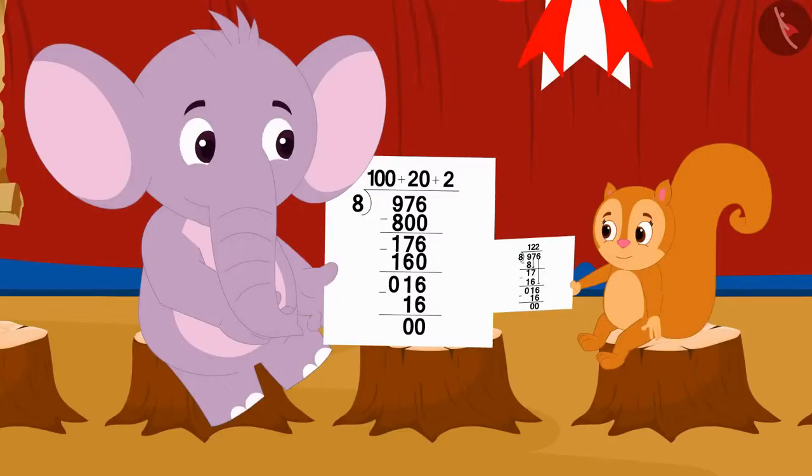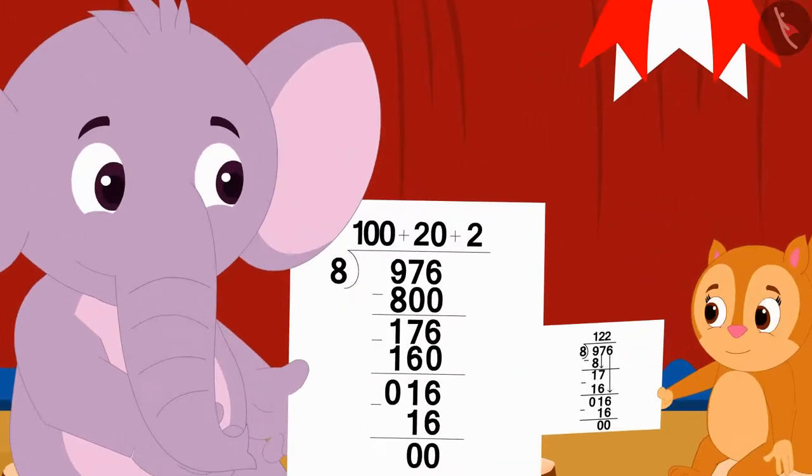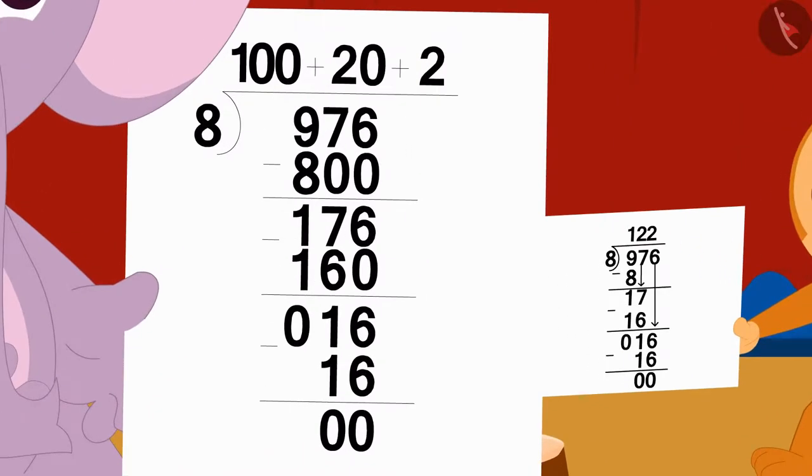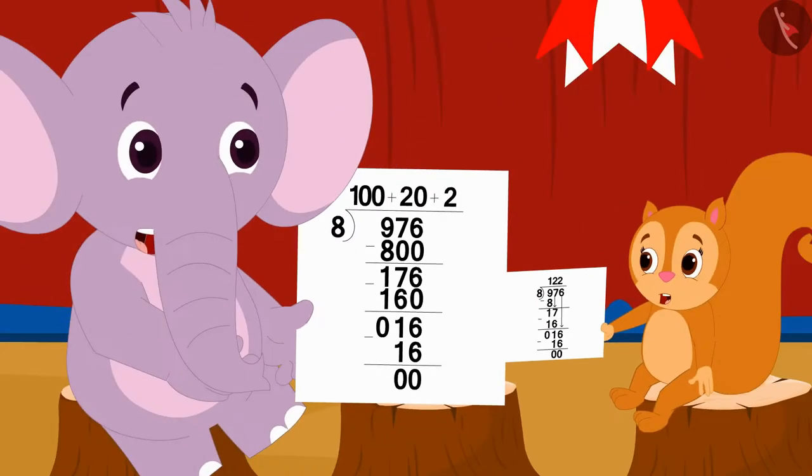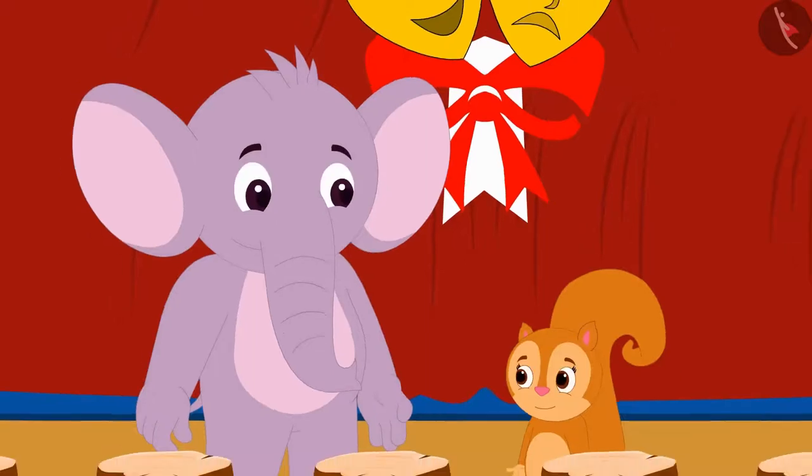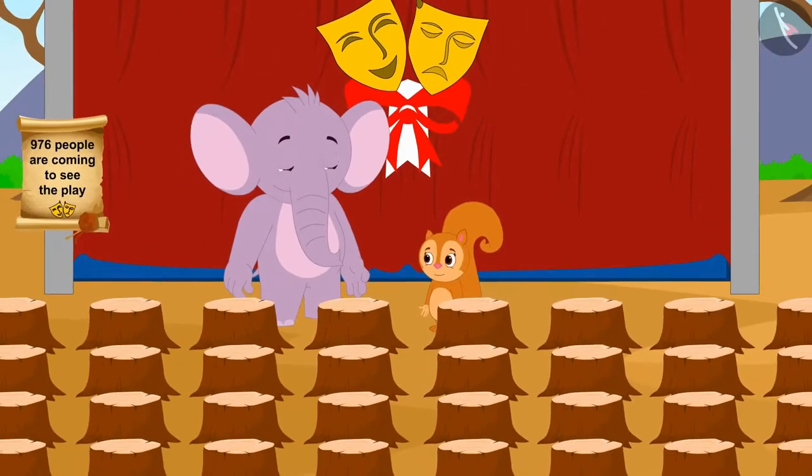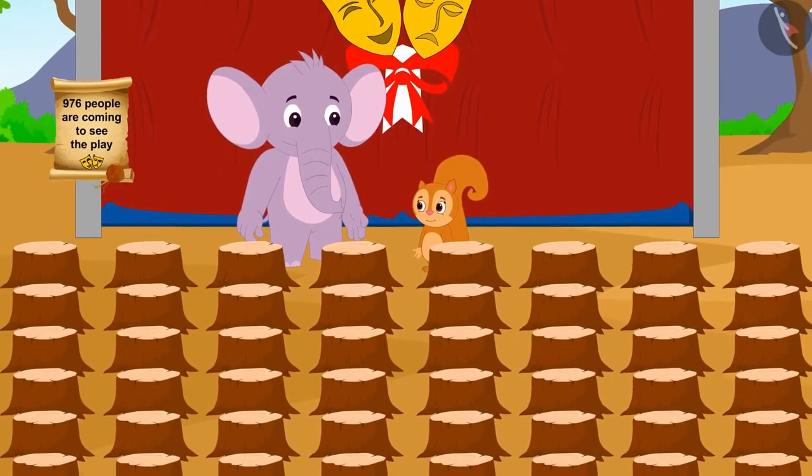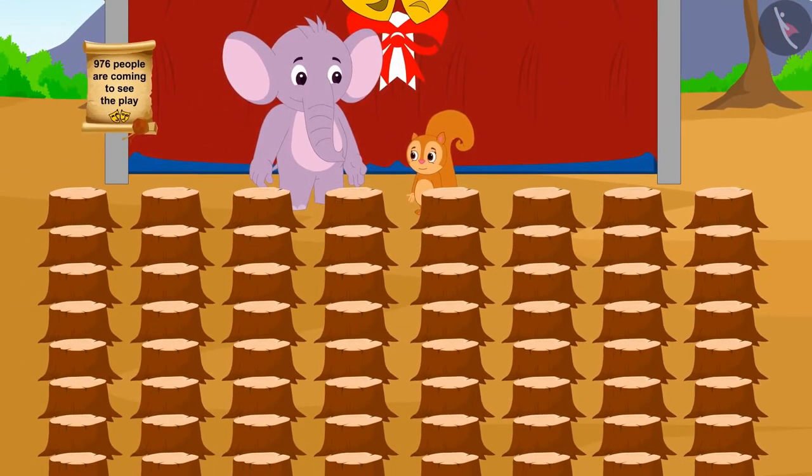Chanda and Appu were shocked when they saw how to do each other's division. Both used different procedures, but both had exactly the same answer. Chanda took the help of Appu, and quickly made 122 rows of 8-8 chairs each, and used all the 976 chairs.